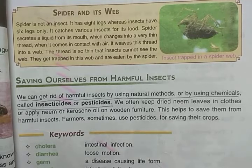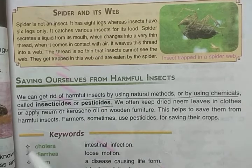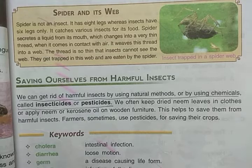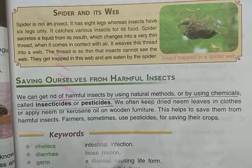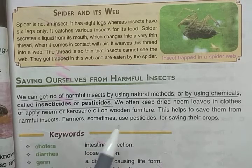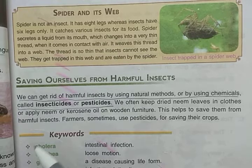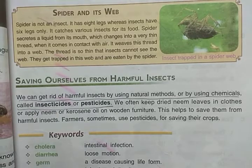Natural methods include keeping dried neem leaves in clothes and applying neem oil or kerosene oil on wooden furniture. These keep harmful insects away from food, furniture, and clothes. Insecticides and pesticides are man-made chemicals — not natural. Farmers use pesticides to save their crops from insects that damage them.